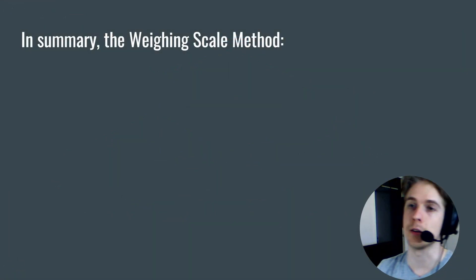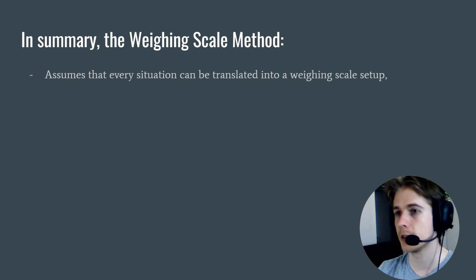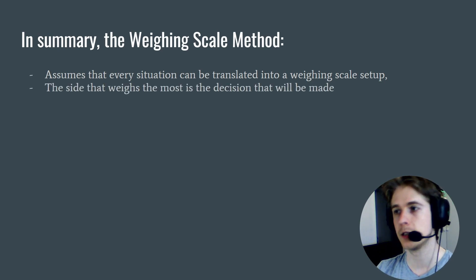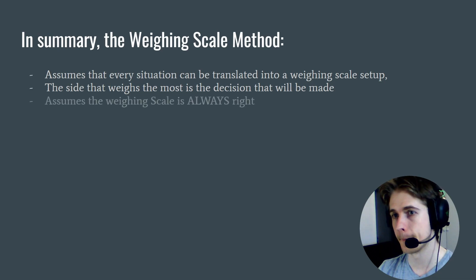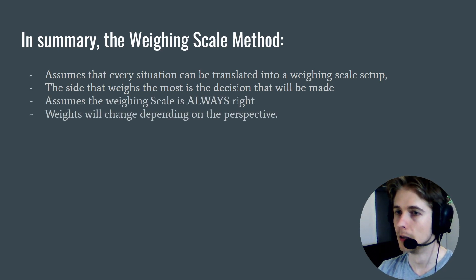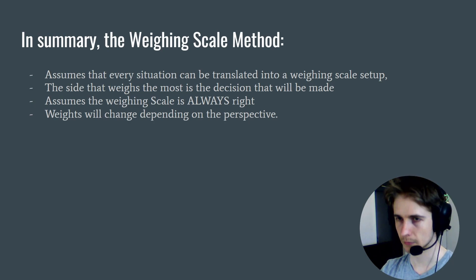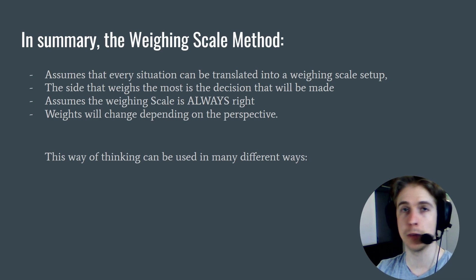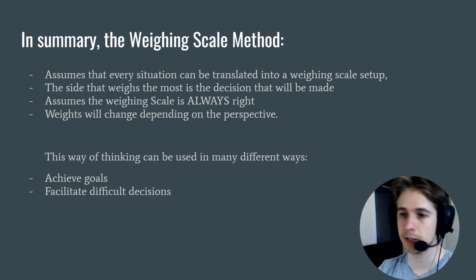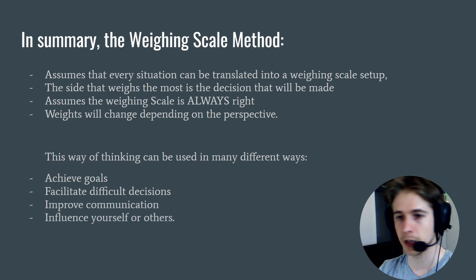In summary, the weighing scale method assumes that every situation can be translated into a weighing scale setup, and the side that weighs the most is the decision. It also assumes the weighing scale is always right. And finally, the weights change depending on the perspective. This way of thinking can be used in many different ways — it can be used to achieve goals, facilitate difficult decisions, improve communication, influence yourself or others, and so on.